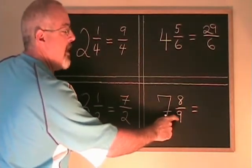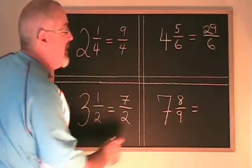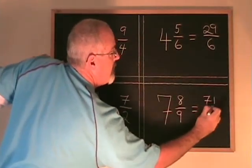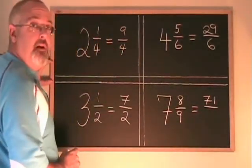7 times 9 is 63 plus 8 is 71. The denominator remains the same.